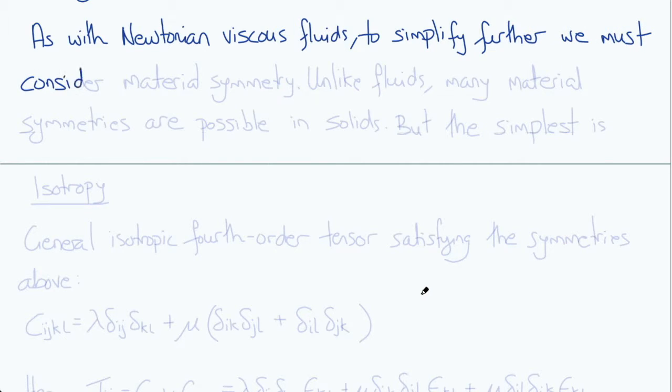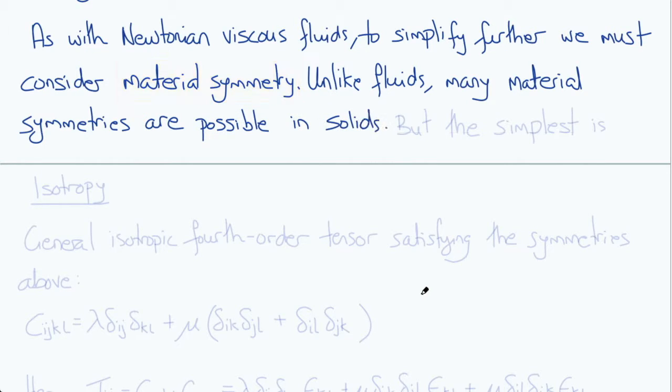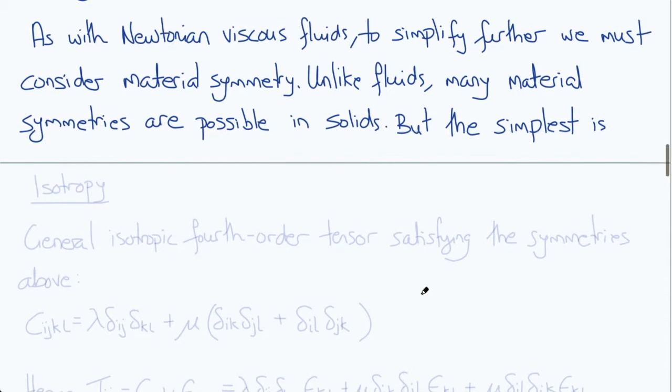Unlike fluids, many material symmetries are possible in solids. It's easy to imagine and think of solids that have different properties in different directions. Like muscle has different properties along its fiber orientations, sort of tendons and ligaments and other fibrous connective tissues.